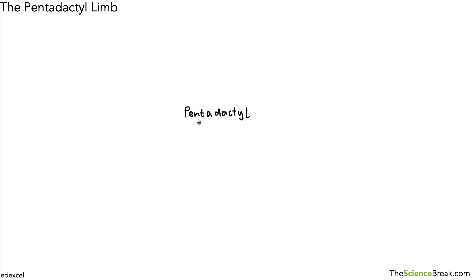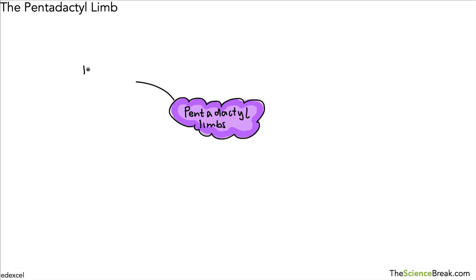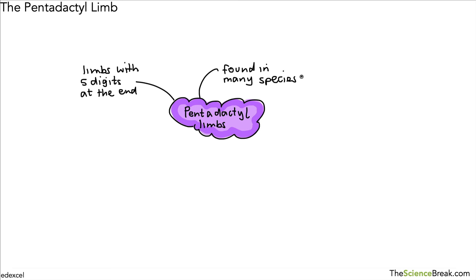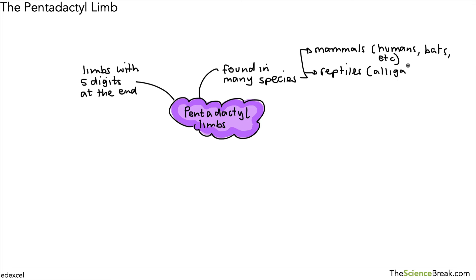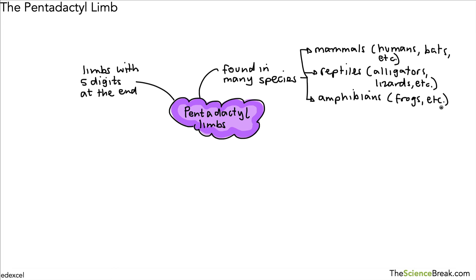Let's do a summary of what we mean by pentadactyl limbs — feel free to make a note. Pentadactyl limbs are limbs with five digits; the word 'penta' means five. They're found in many different species: mammals such as humans and bats, reptiles such as alligators and lizards, and amphibians such as frogs and toads. All of these have pentadactyl limbs.